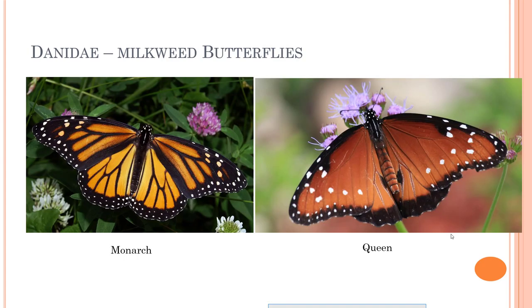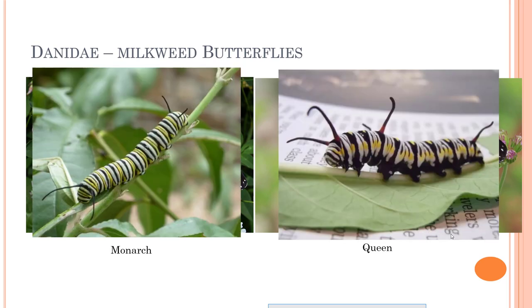Everybody's favorite group of butterflies is certainly the Danaidae family — our monarchs and our queens. These guys love milkweed and utilize it as part of their life cycle, laying their larvae on it. The monarch and queen caterpillars are very striking — they have that aposematic coloration. The monarch, being the king of all butterflies, is kind of a Texas staple and is our Texas state insect. It's a really pretty, interesting, and very large butterfly as well.